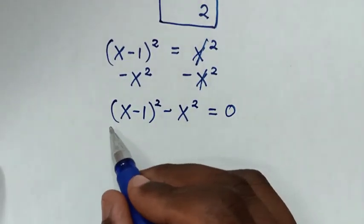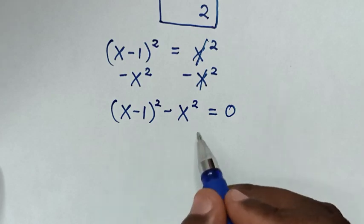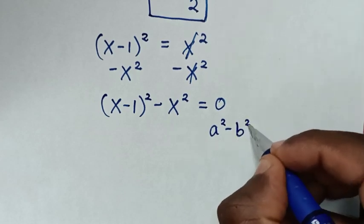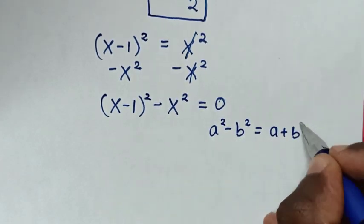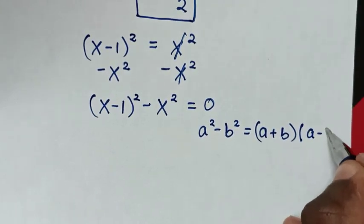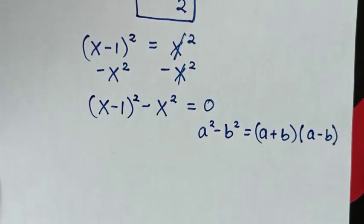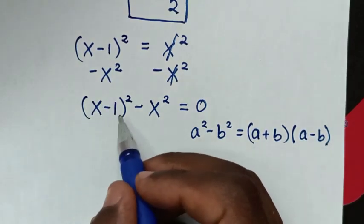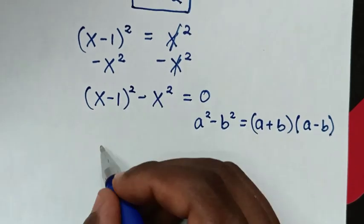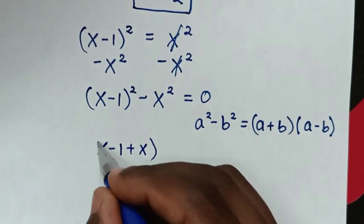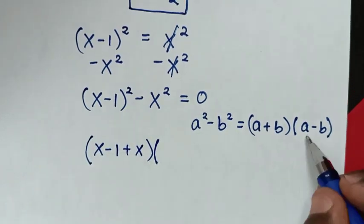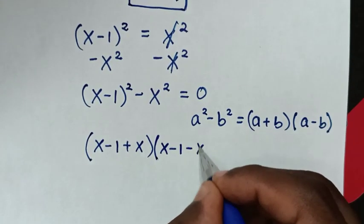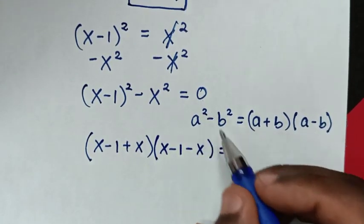The left side is in the form of a difference of squares. We apply the rule a squared minus b squared equals (a plus b)(a minus b). Applying this: a plus b gives (x minus 1 plus x), and a minus b gives (x minus 1 minus x), so the expression becomes (x minus 1 plus x)(x minus 1 minus x) equals 0.